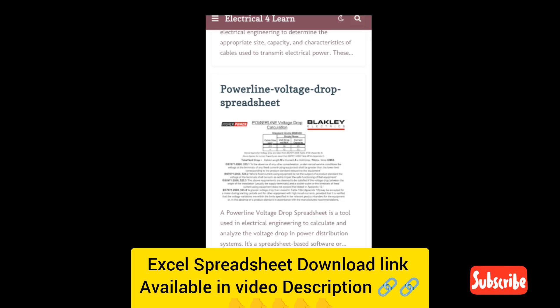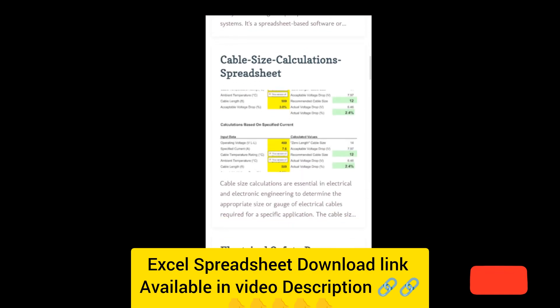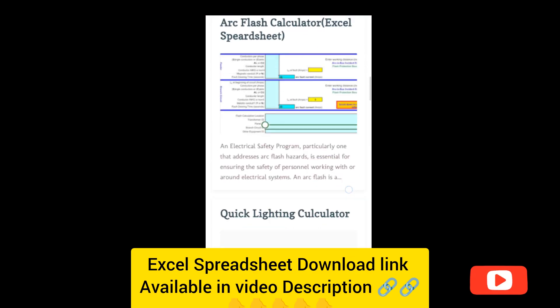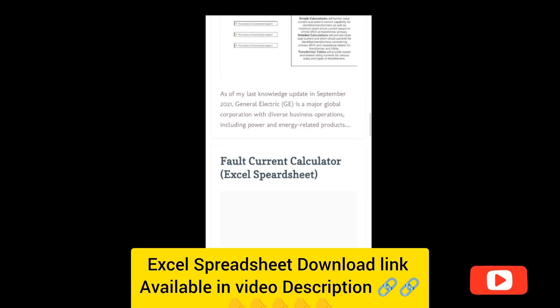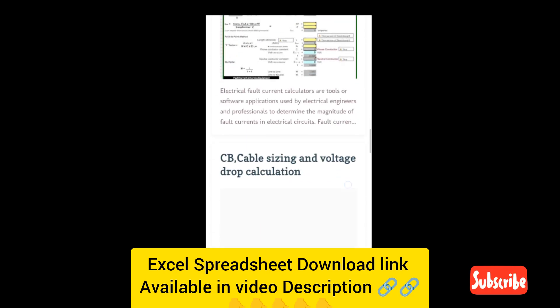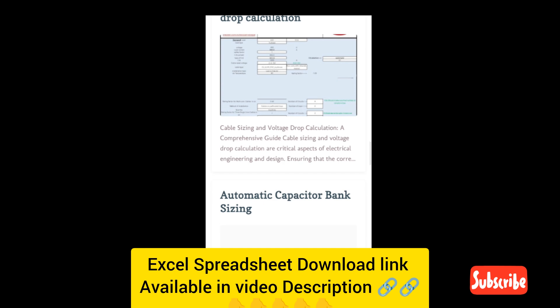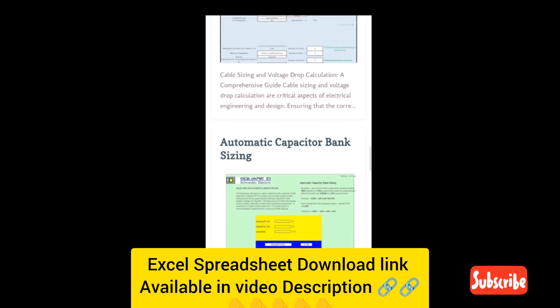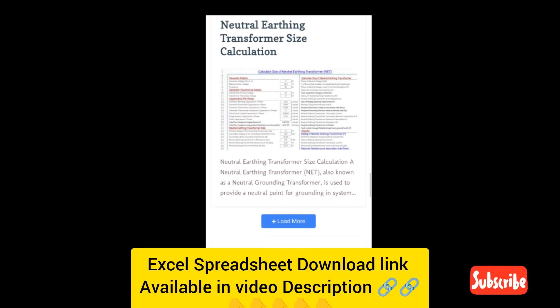Common types of electrical calculation spreadsheets. Cable sizing calculates appropriate cable size based on current, voltage drop, length, installation method, and ambient temperature. Ensures compliance with standards like IEC, NEC, or BS.